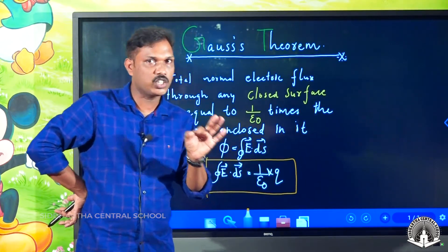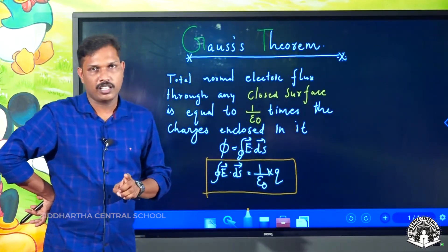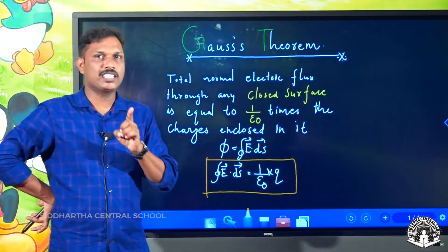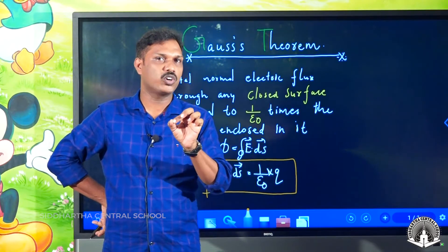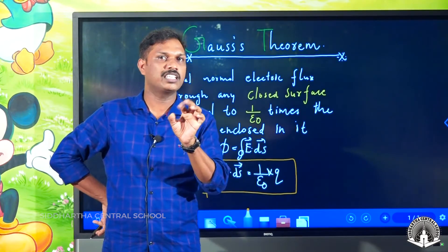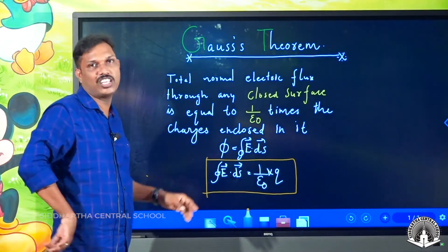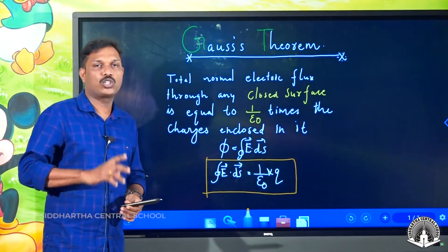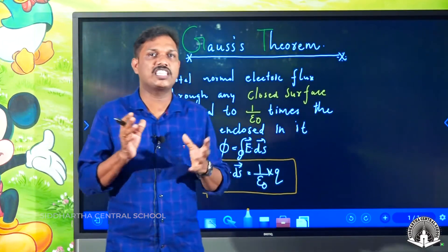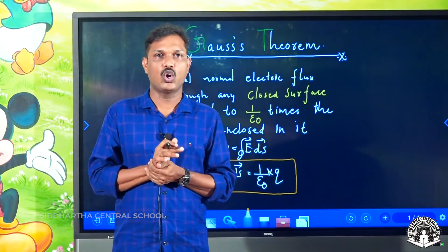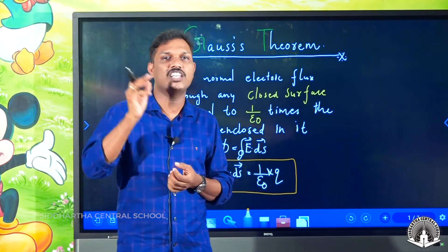Gauss theorem is applied in electrostatics and magnetism. The Gauss theorem in electrostatics states that the total normal electric flux enclosed in any closed surface is equal to 1 by epsilon 0 times the charges enclosed in it.